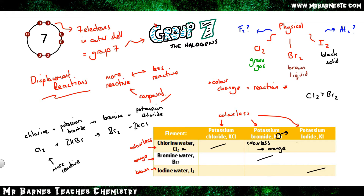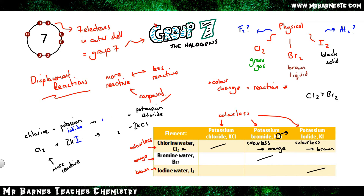Doing the same with chlorine reacting with potassium iodide also gives a colour change — from colourless to brown. This shows chlorine is more reactive than both bromine and iodine. Word equation: chlorine + potassium iodide → iodine + potassium chloride.